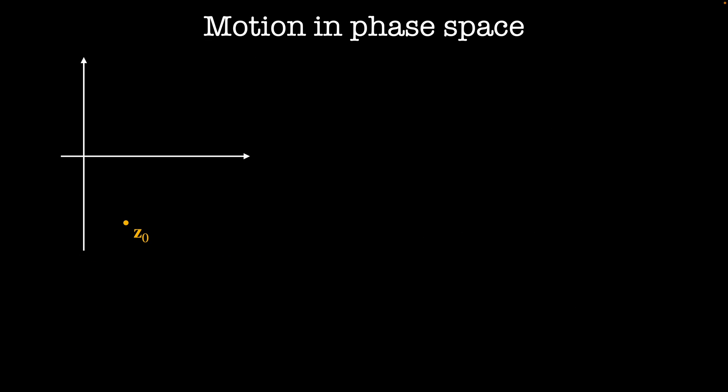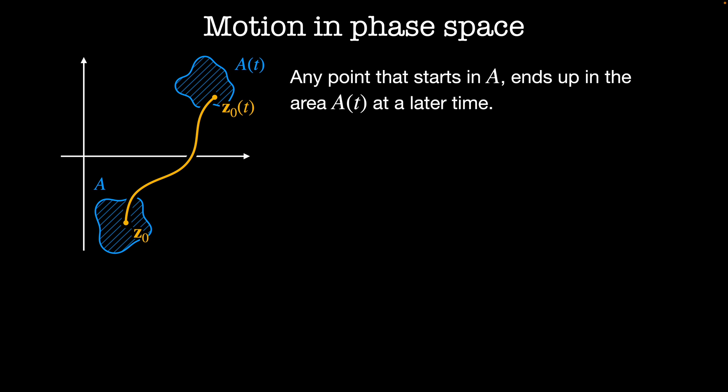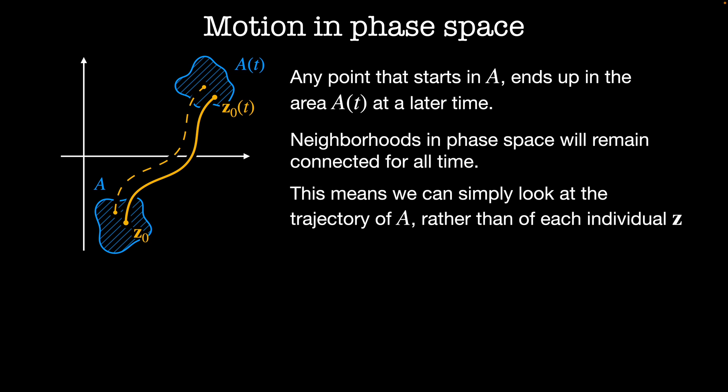Imagine we have some point z naught in phase space and we're going to evolve our dynamics forward in time to z naught of t. Let's take a neighborhood of points around z naught and we'll call it A and we're going to flow all of the points in A along in time too. That gives us a neighborhood around z naught of t and we'll call it A of t. We'd like to show that any point that starts in A ends up in the area A of t at a later time. This tells us that neighborhoods in phase space remain connected for all time. That means that instead of looking at individual trajectories, we can simply look at the entire trajectory of A to get the full dynamics of our system.